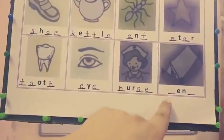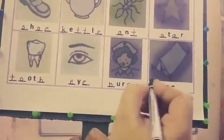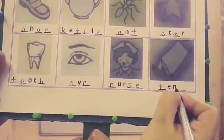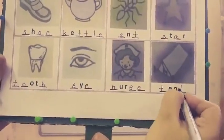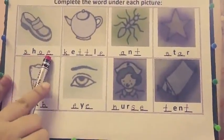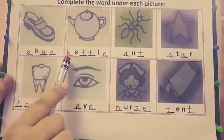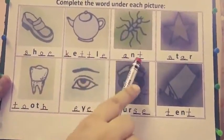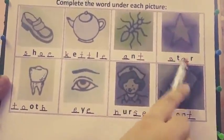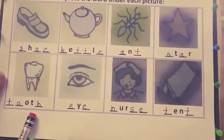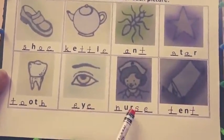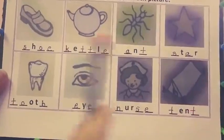What is this? This is a tent. T-E-N-T. To repeat: shoe, kettle, ant, star, tooth, eye, nurse, tent.